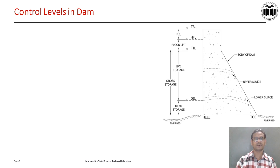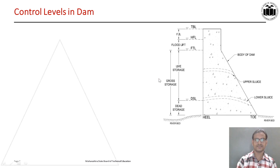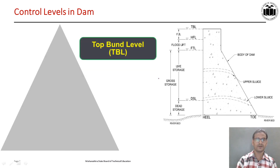Let us see the control levels in dams. Here you can see the cross-section of a dam; behind it there is a reservoir pool, and these are the levels in the dam and these are the storages. TBL, that is top bund level, is the reduced level of the dam which depends on the storage capacity, flood lift, and freeboard of the dam. The height of the dam at any section is the difference between top bund level and ground level. Here you can see the top bund level of the dam.